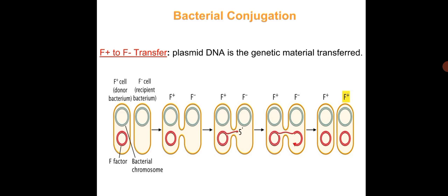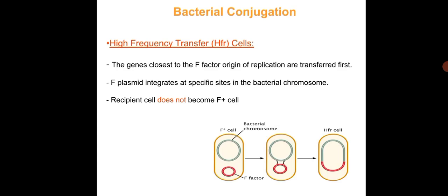Once the new F plasmid is formed, the recipient is converted into an F+ bacterium. During conjugation, plasmid DNA is the genetic material transferred; however, chromosomal DNA can sometimes be transferred, especially when the F plasmid is integrated into the bacterial genome, forming a high frequency recombination (HFR) strain.